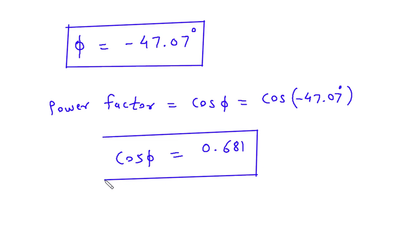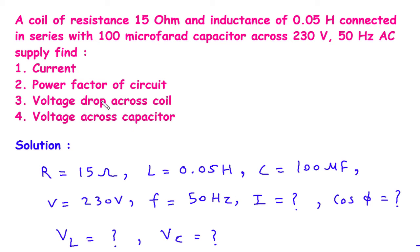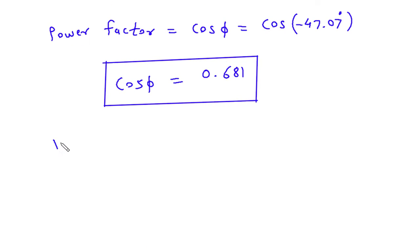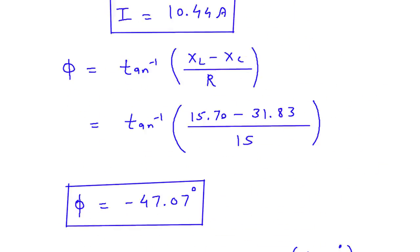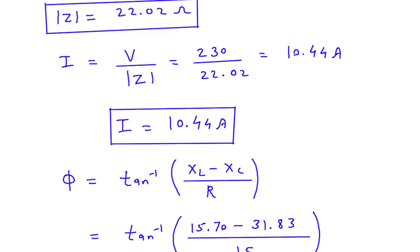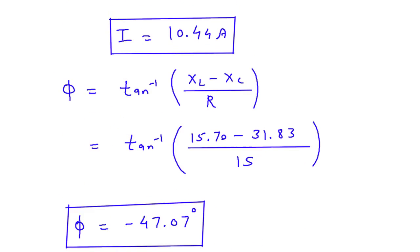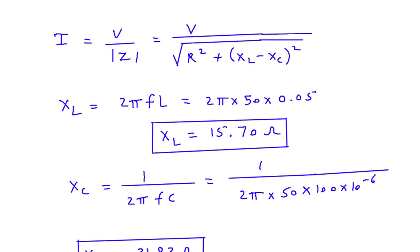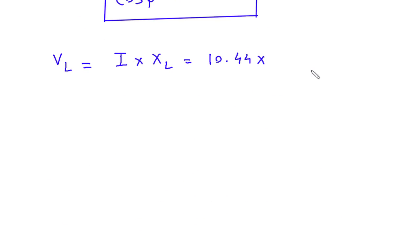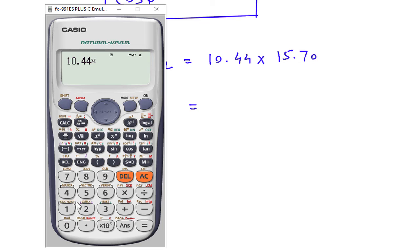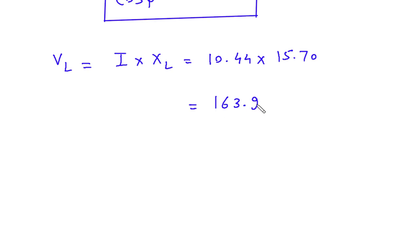Next, we have to find the voltage drop across the coil. Voltage drop across the coil is VL, and VL equals current I multiplied by XL. So VL equals 10.44 multiplied by 15.70, which gives 163.908 volts.